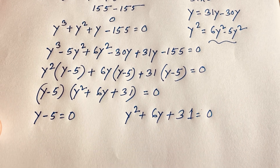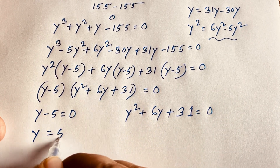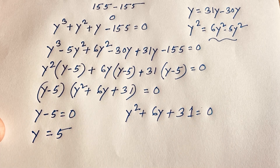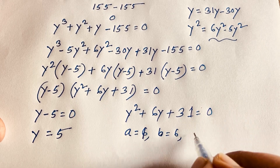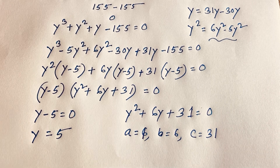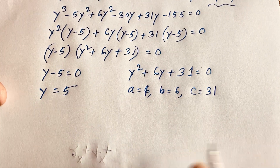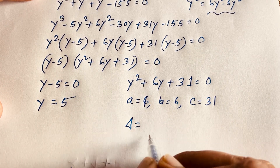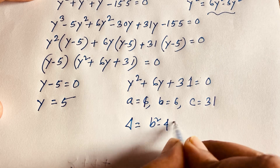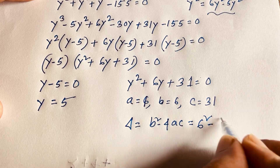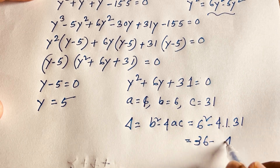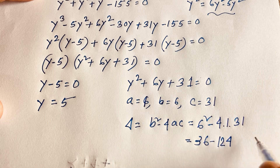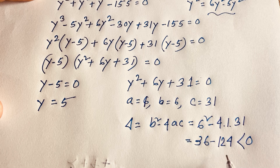From the two cases: first, y minus 5 equals zero gives y equals 5. Second, y squared plus 6y plus 31 equals zero, where a equals 1, b equals 6, c equals 31. The discriminant delta equals b squared minus 4ac equals 36 minus 4 times 1 times 31 equals 36 minus 124, which is less than zero.